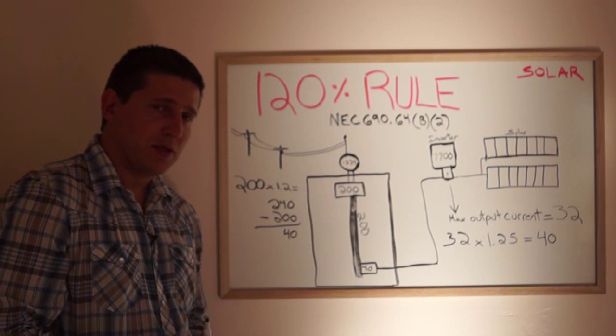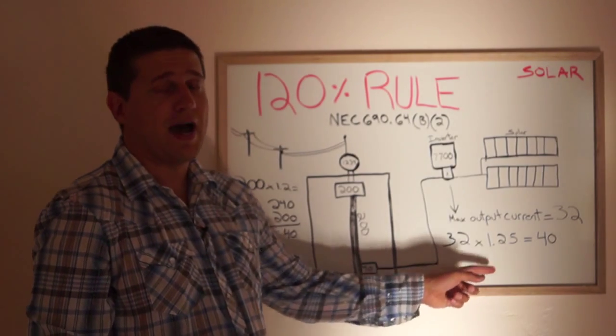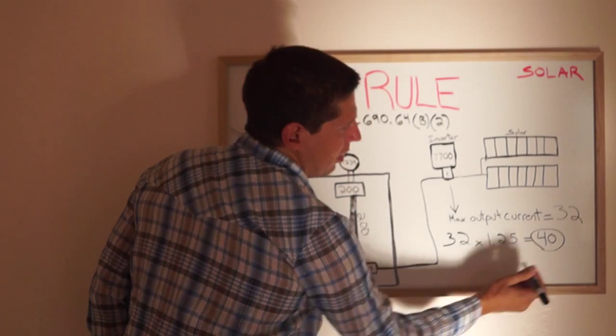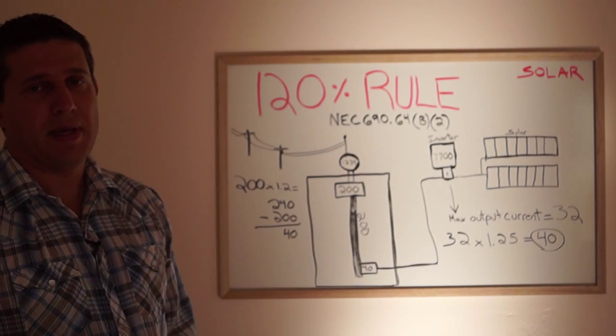Overcurrent protection still applies to solar. So we have 32 amps times 1.25 equals 40 amps. The largest system you can install on a 200 amp main service panel.